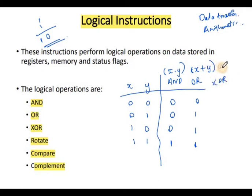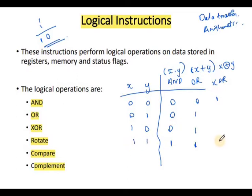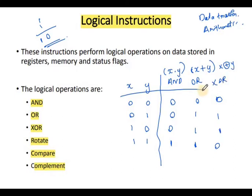For the XOR operation: same inputs give output 0, and different inputs give output 1. So 0,0 gives 0; 0,1 gives 1; 1,0 gives 1; and 1,1 gives 0. Same inputs result in value 0, and different inputs result in value 1. This is the XOR operation.